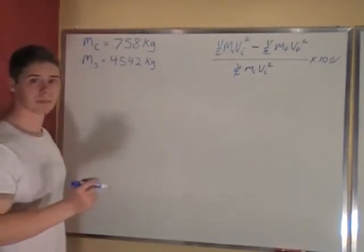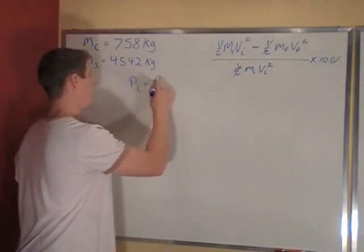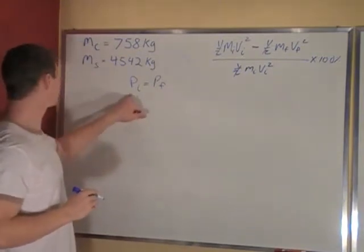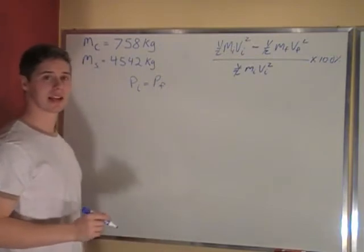So we're going to say initial momentum has to equal final momentum. Conservation of momentum. So initial momentum comes from the car, because only the car is moving; the semi is standing still. So we have the initial mass times initial velocity equals final mass, final velocity.